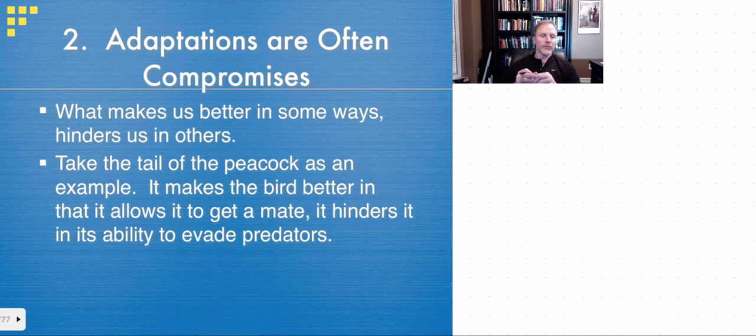So now just moving on here, adaptations are often compromises. So you have to keep in mind what makes us better in some cases hinders us in others. So think of the peacock's tail has a very large train, a very large tail. It has the ability to attract a mate, but it also is baggage it's got to carry around to avoid predation. So that's the adaptation that's good and it's bad.